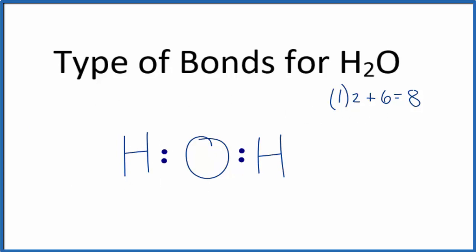We still have two more pairs. We've used four and we need eight. Now we have an octet for the oxygen. Hydrogen only needs two. This is a good Lewis structure for water.